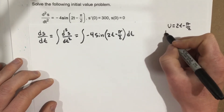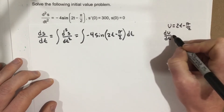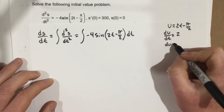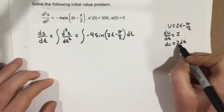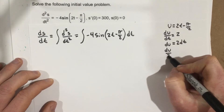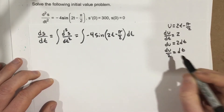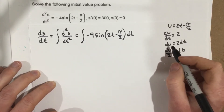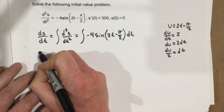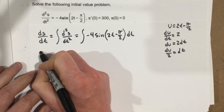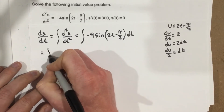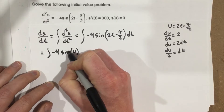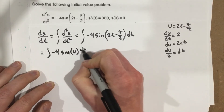So du/dt equals 2. I multiply by dt and get du equals 2 dt. Dividing by 2 gives du over 2 equals dt. I'm going to use this du over 2 substitution twice — once in the first integral and again in the second. So substituting in, that equals the integral of negative 4 sine u, and then replacing dt with du over 2.